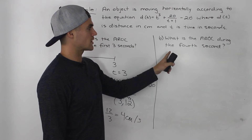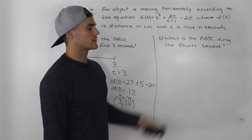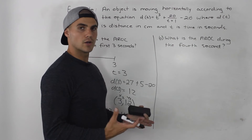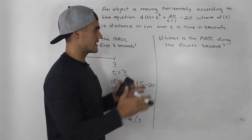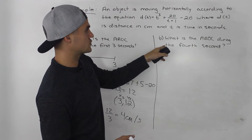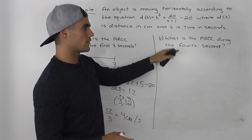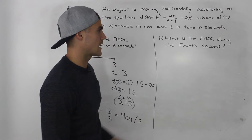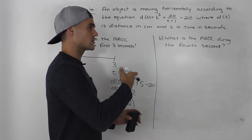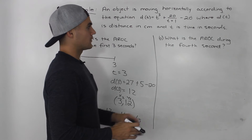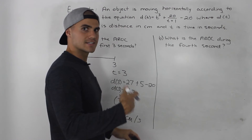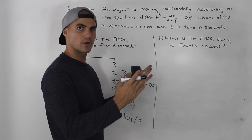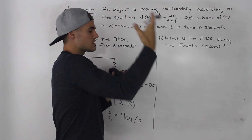For Part B: what is the average rate of change during the fourth second? Students get confused here because finding average rate of change always requires two points — two times. When they say 'during the fourth second,' it's not asking for the instantaneous rate of change at the fourth second, which would require calculus covered in future videos. There's still a range of time — from the beginning to the end of the fourth second.